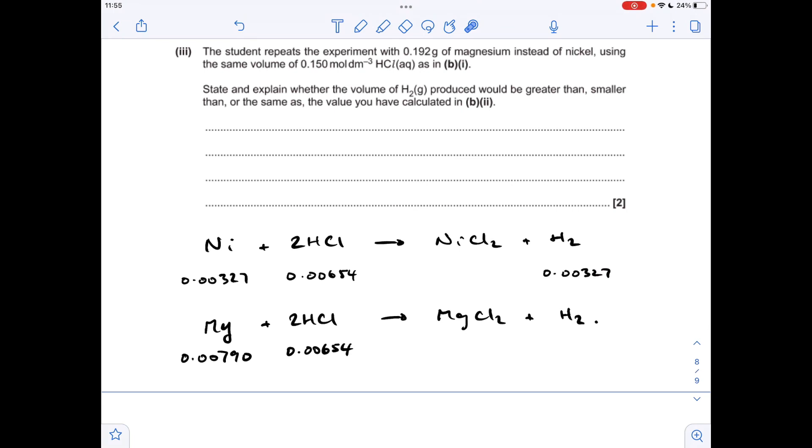So looking at the magnesium equation now, you'll see it's got the same stoichiometry, the same mole ratio running through it. We're using the same volume and concentration of HCl, so we've got the same number of moles as before. But we've got more moles of magnesium.